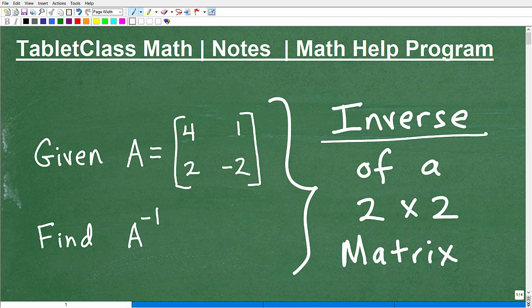So given matrix A is equal to this, 4, 1, 2, negative 2, we want to find this right here, A to negative 1. And this is the notation for the inverse matrix.